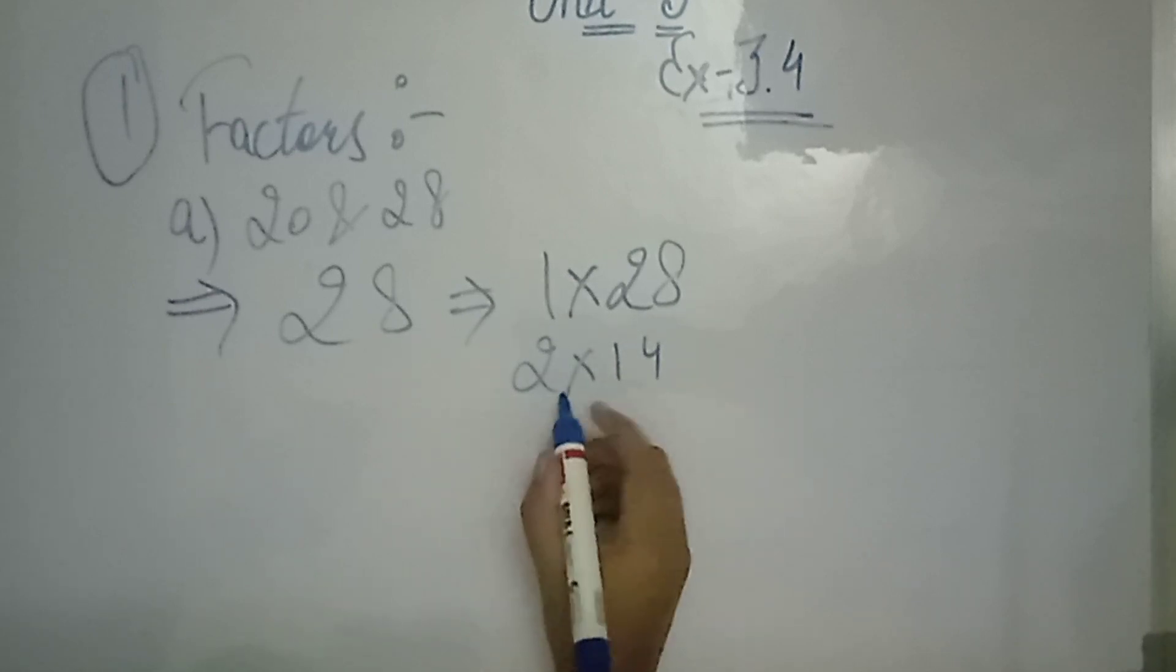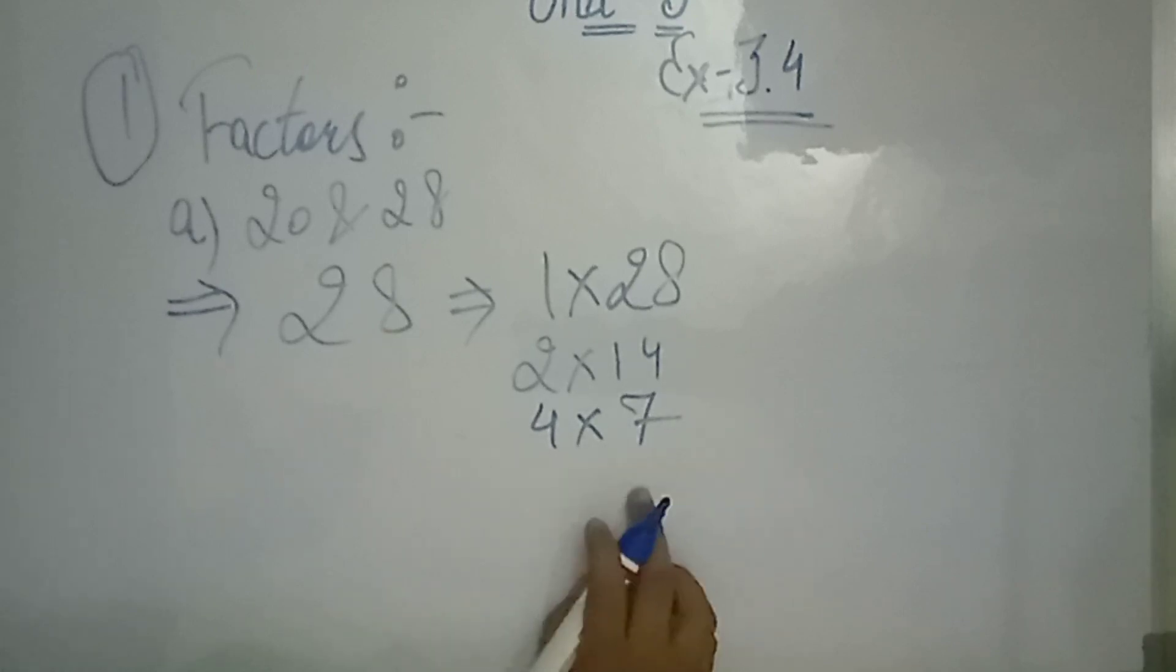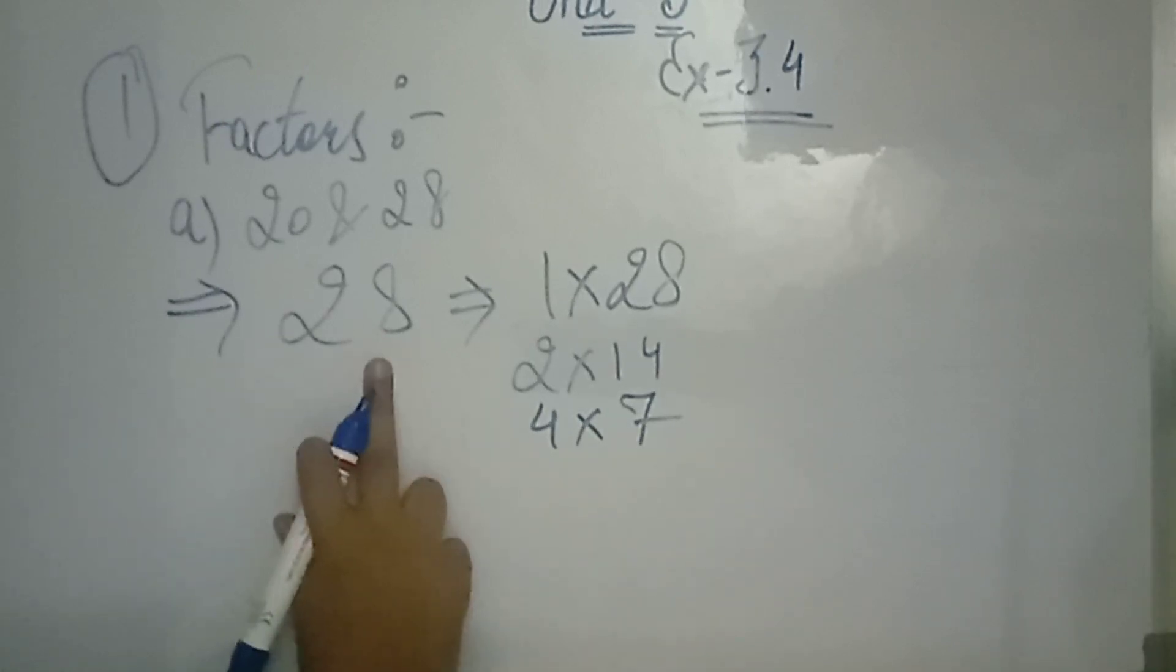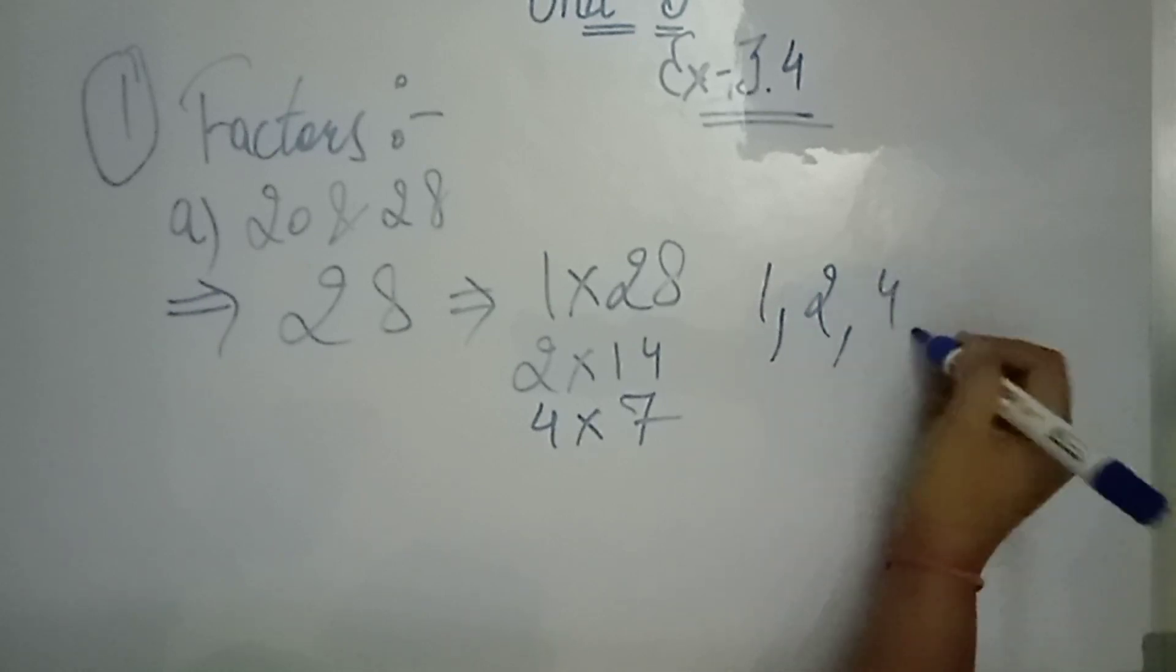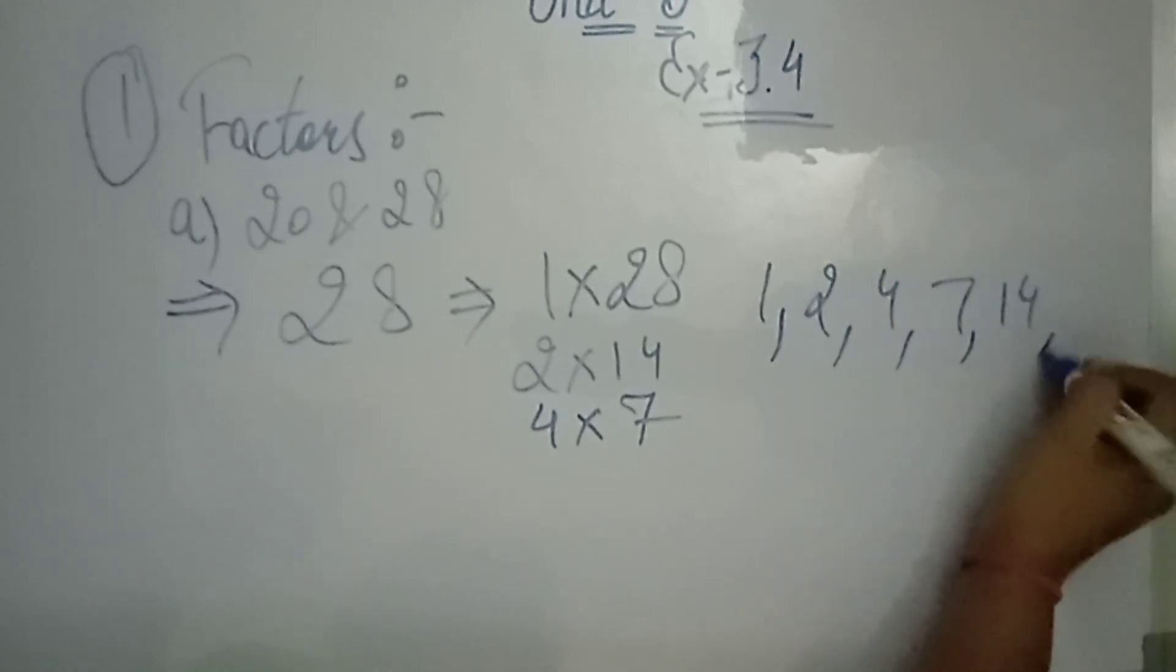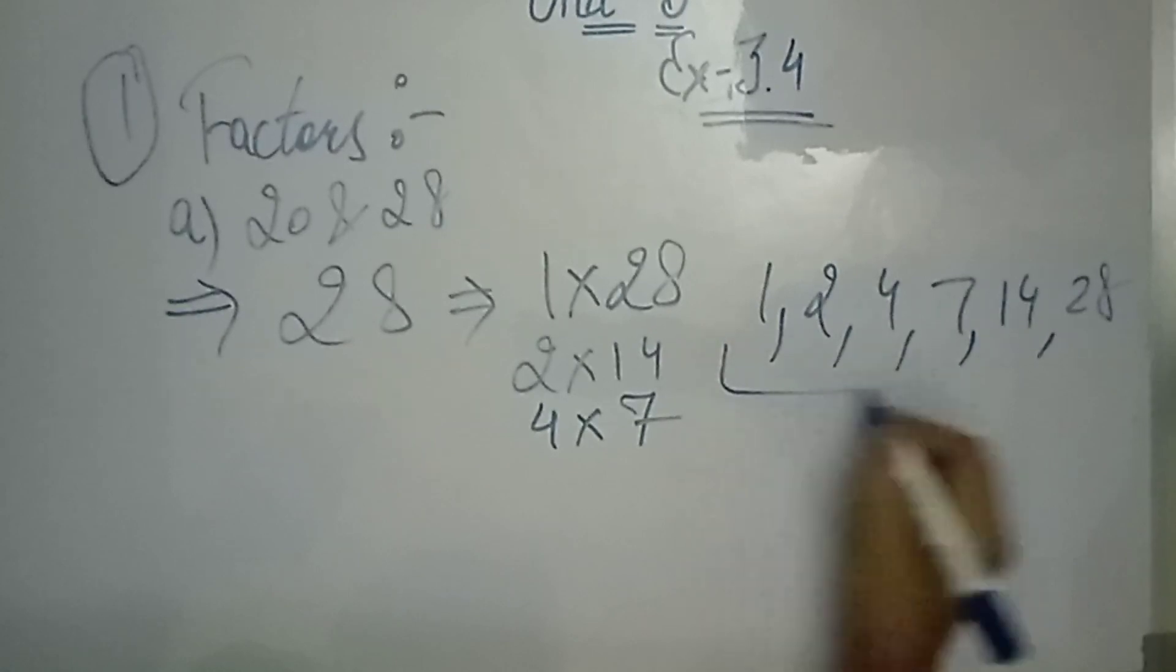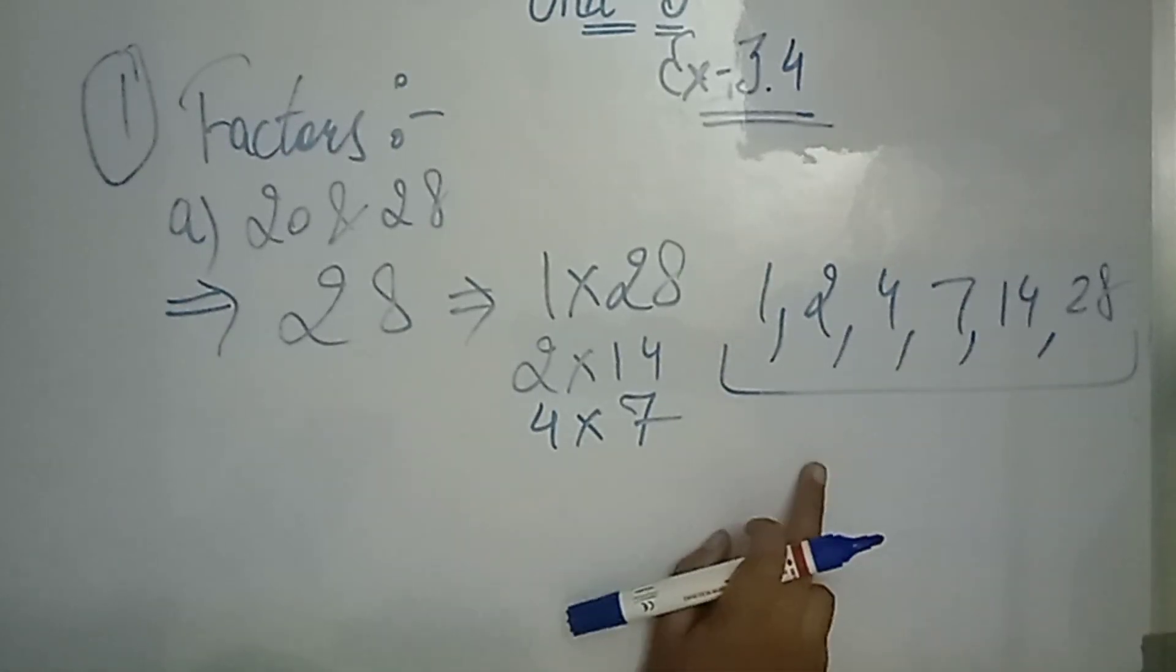2 multiplied by 14, and 4 also, 4 multiplied by 7. 5 is not going to be, 6 is not going to be, 7 is going to be. So how many factors have been? 1, 2, 4, 7, 14 and 28. What are your factors? 28 factors.